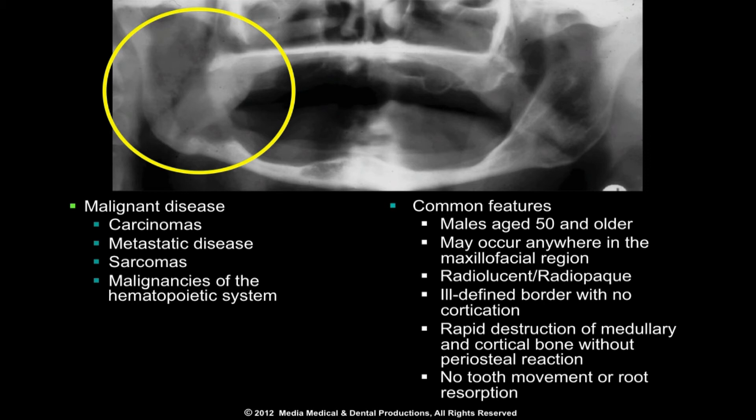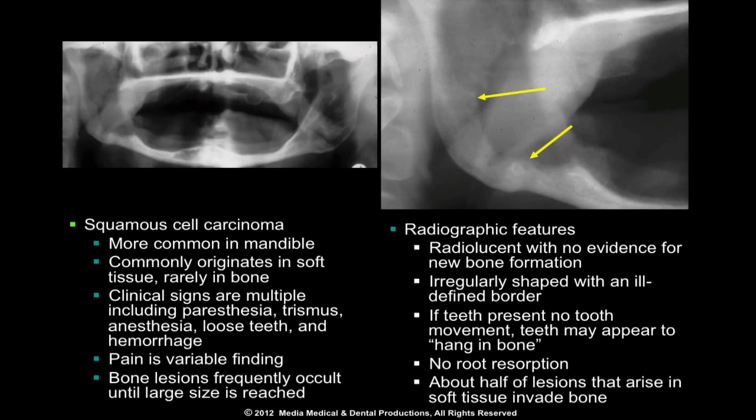The prevalence of oral malignancy is low. It most commonly occurs in males over the age of 50, anywhere in the maxillofacial region. Malignant disease produces destruction of both medullary and cortical bone without periosteal reaction. Its appearance ranges from radiolucent to mixed radiolucent-radiopaque with residual islands of bone within the mostly radiolucent lesion. Squamous cell carcinoma is the most common oral malignancy.